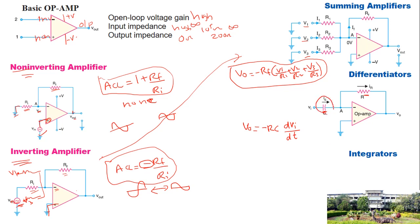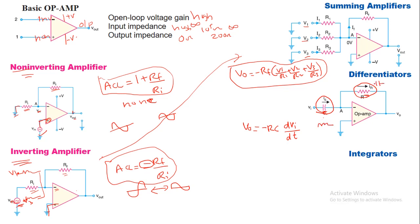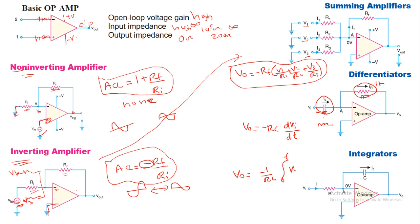To construct an integrator, interchange the positions of the capacitor and resistance — a resistance in the input and a capacitor in the feedback. The output expression for the integrator is: Vout equals minus 1/(RC) times the integral of Vi with respect to time. So the integrator outputs the integral of the input voltage, while the differentiator outputs the differential of the input voltage.